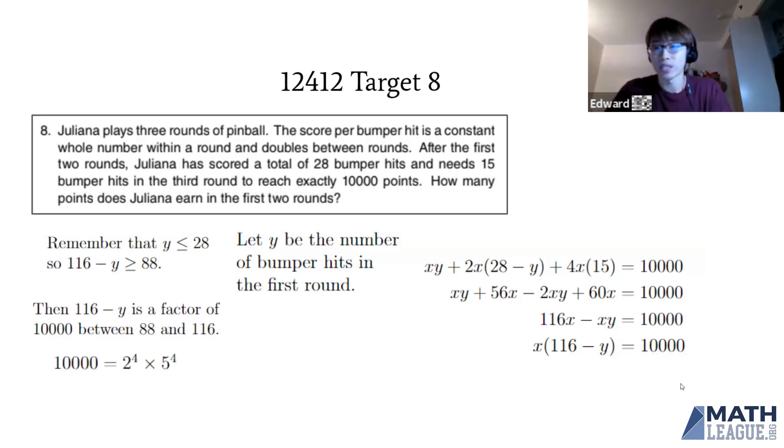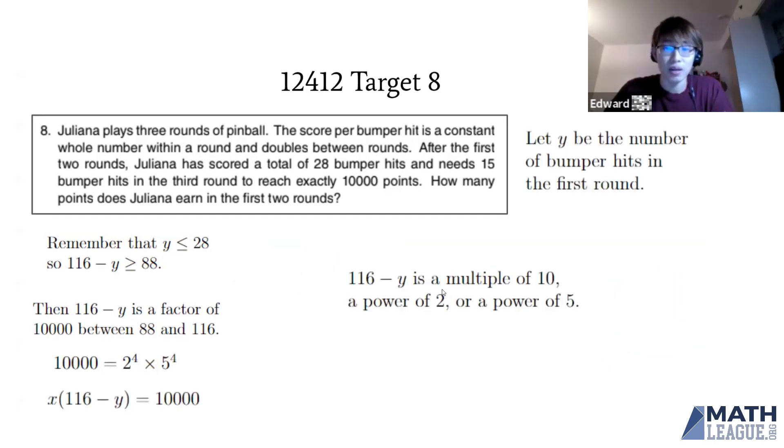10,000 equals 2 to the 4th times 5 to the 4th, so 116 minus Y must be a multiple of 10, a power of 2, or a power of 5. If it's a power of 2 like 32, 64, or 128, none are in our range. If it's a power of 5 like 25 or 125, none are in the range either.